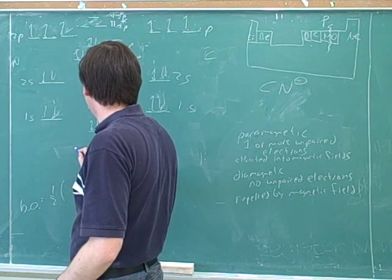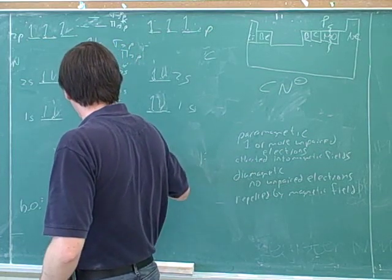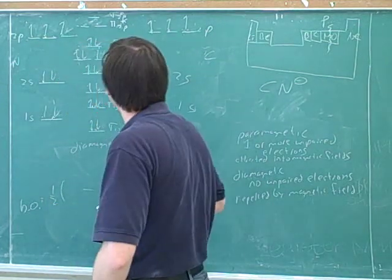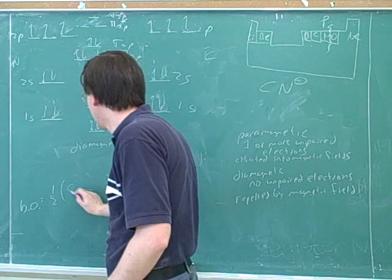So, paramagnetic or diamagnetic? Diamagnetic. There's no unpaired electrons. And what numbers can I plug in here?